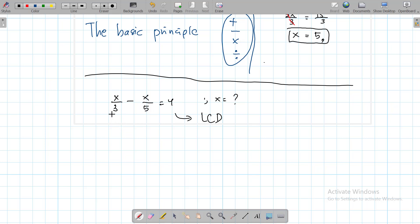Look at the denominators 3 and 5. The least common denominator is 15. So we have to multiply both sides by 15. So we have x divided by 3 multiplied by 15, minus x divided by 5 multiplied by 15, and 4 multiplied by 15.